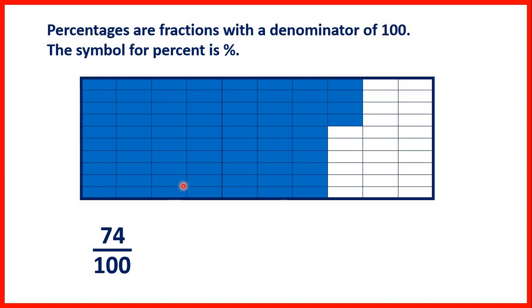As a fraction, we could write what we see as 74 over 100. As a decimal, we could write 0.74 because the second digit after the decimal point is the hundredths digit, and we have 74 hundredths.